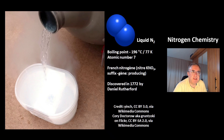This is a picture of liquid Nitrogen. It has a boiling point of minus 196 degrees Celsius, which is 77 Kelvin. The atomic number is 7.